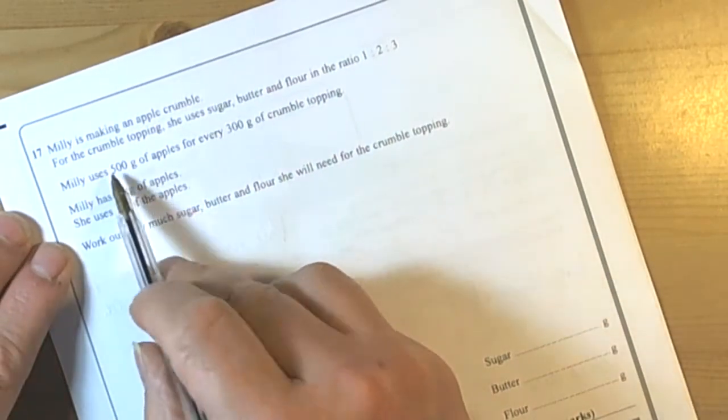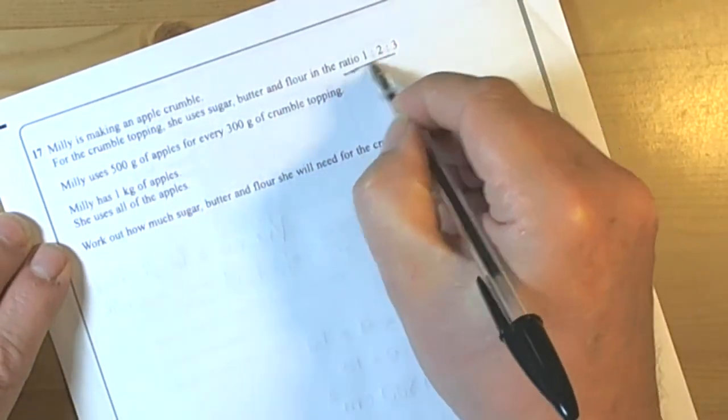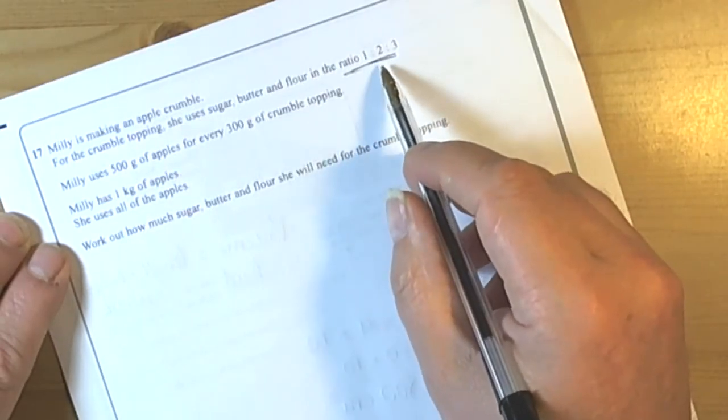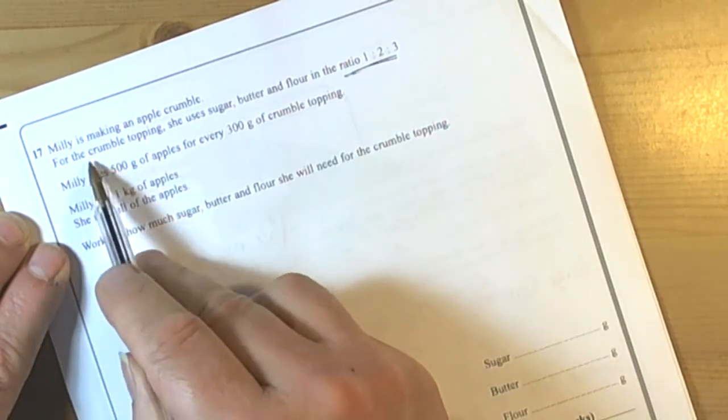So this question is involving ratios, so we're going to have to think about what technique we're going to use for this because lots of different things can happen with ratios. And it's given us some information - it's about a